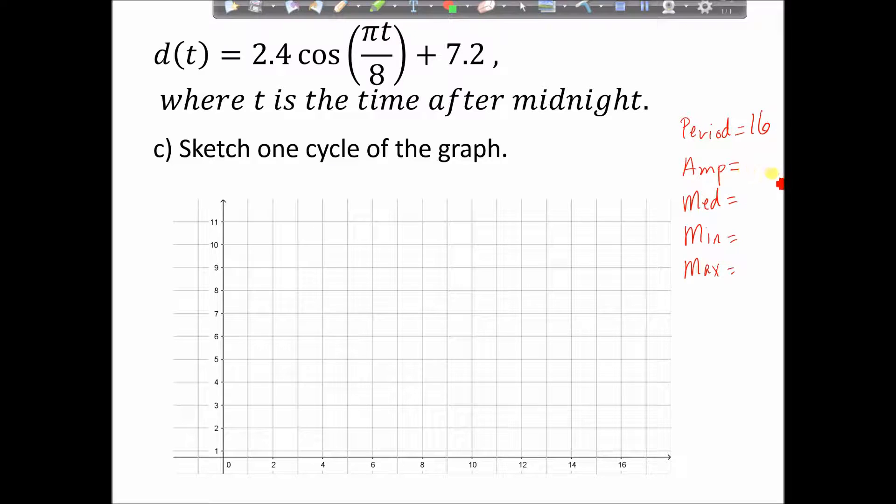So our amplitude, well, that's the number that sits out front, that's our a, so that's going to be 2.4. So it goes up and down by 2.4. The median, well, that's our vertical translation, so that's 7.2. If my median is 7.2 and I'm going up and down by 2.4, well, that's going to make my min 4.8, because 7.2 minus 2.4 is 4.8, and my max adding those two together is 9.6. So I've got all the key information that I need to draw my graph here.